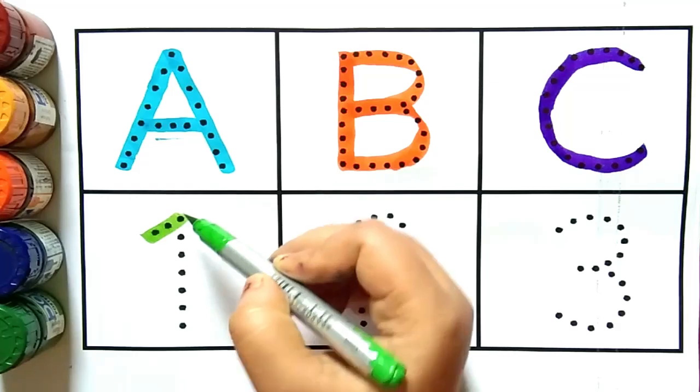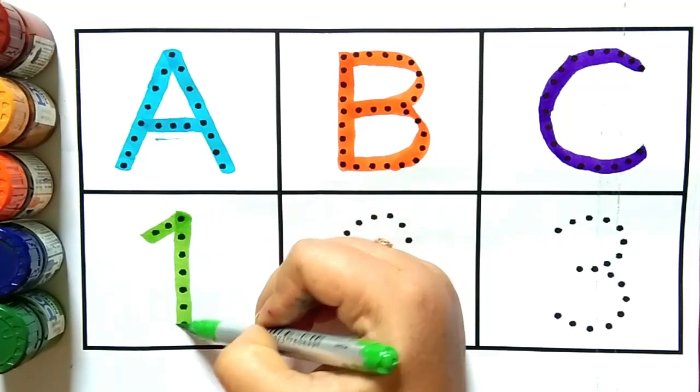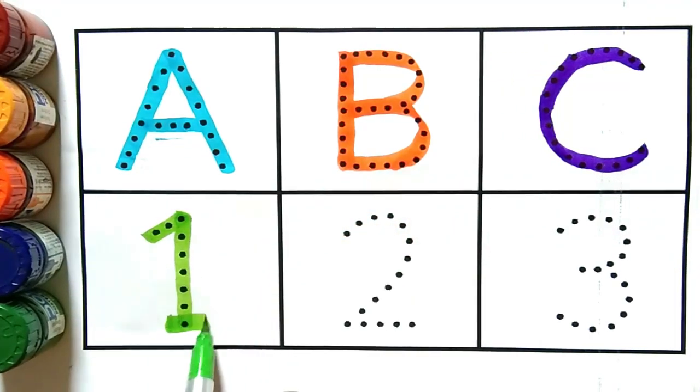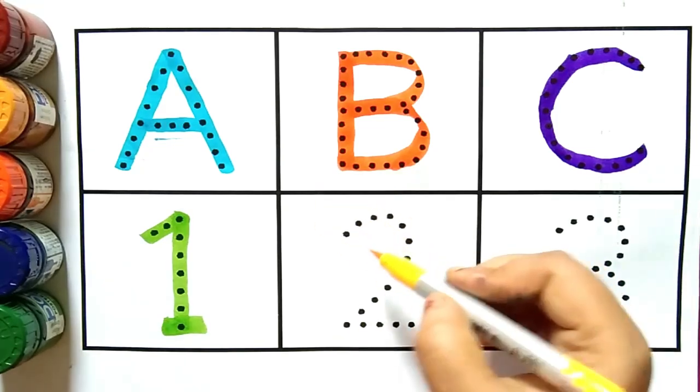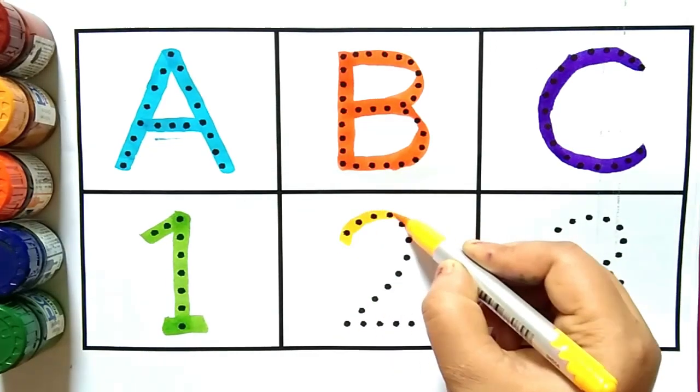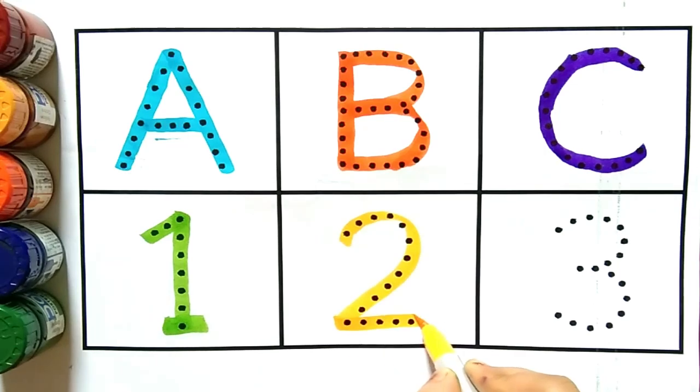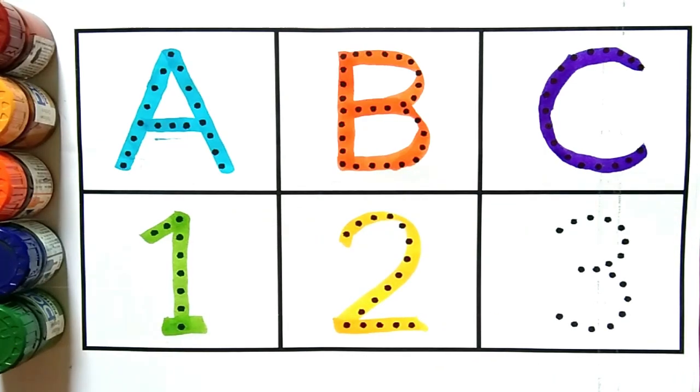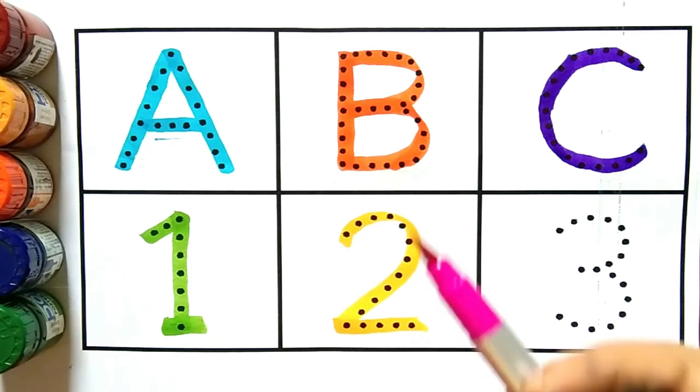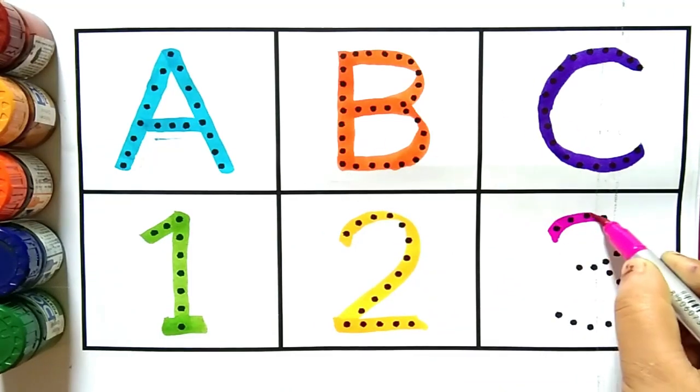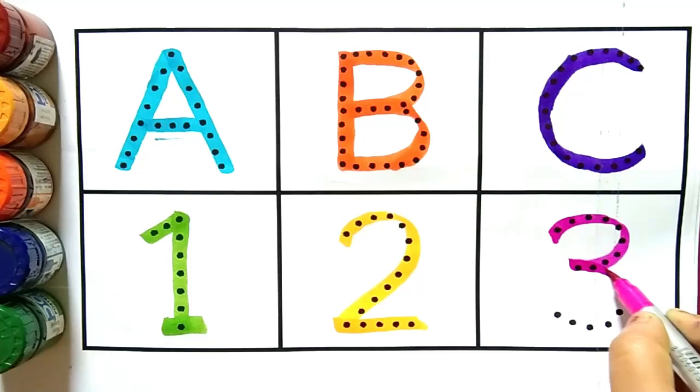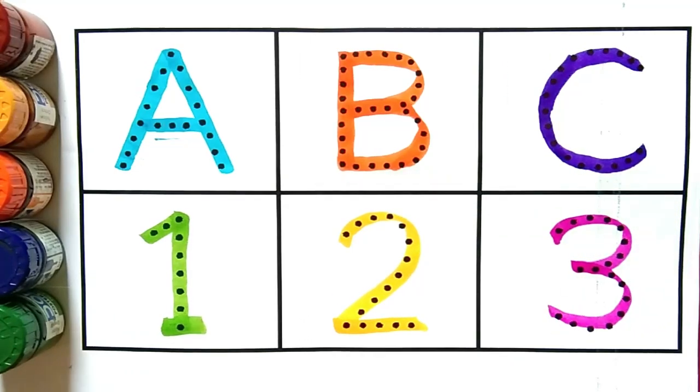Yeh hai number one. Kya hai kids, yeh hai number one. Yellow color. One ke baad aata hai Two. Yeh hai number two. Kya hai kids, yeh hai number two. Pink color. Two ke baad aata hai Three. Yeh hai number three. Kya hai kids, yeh hai number three.